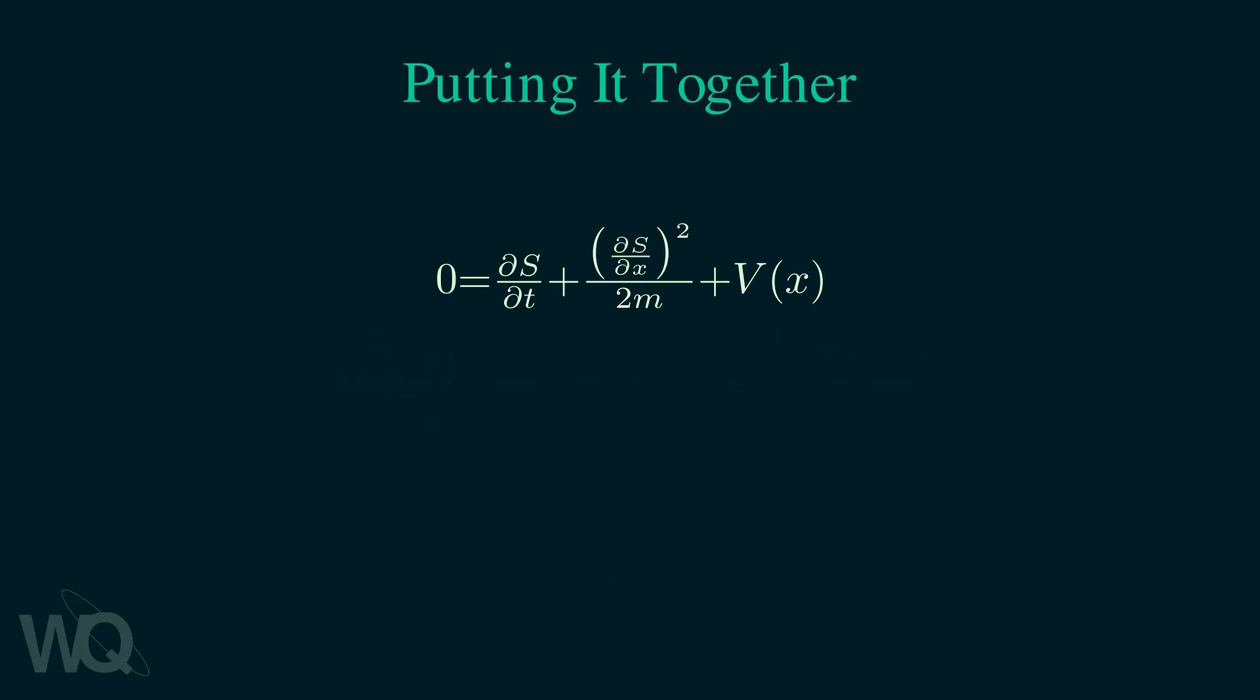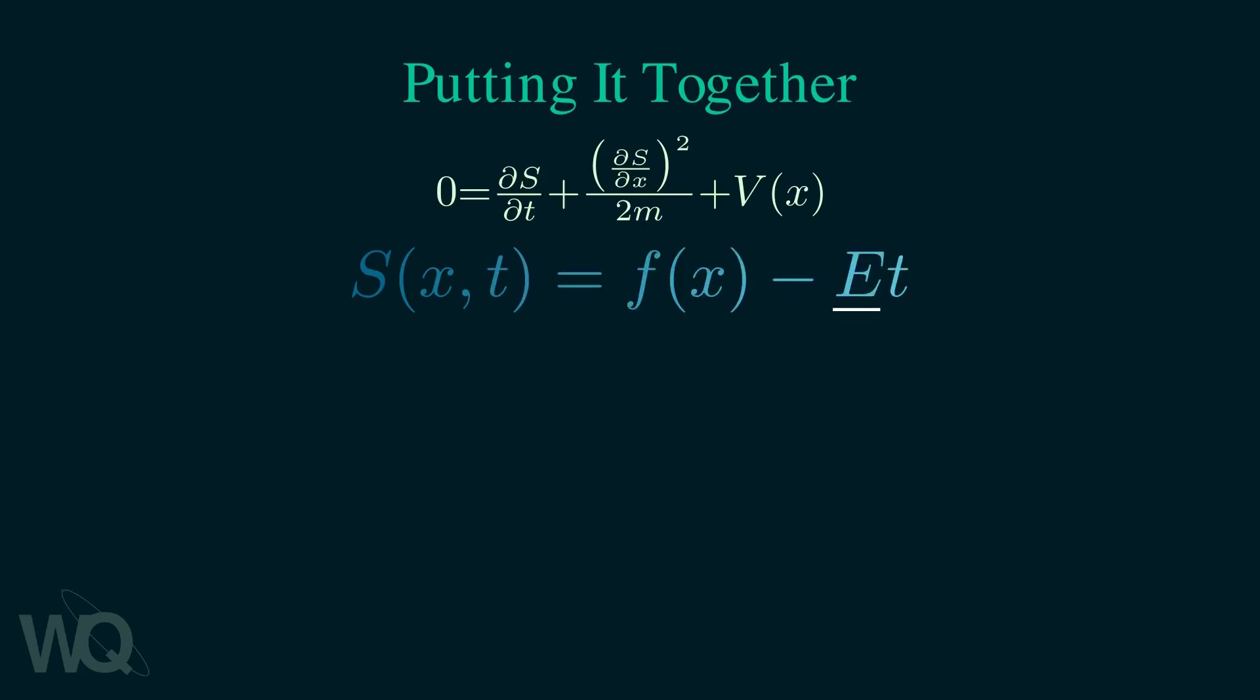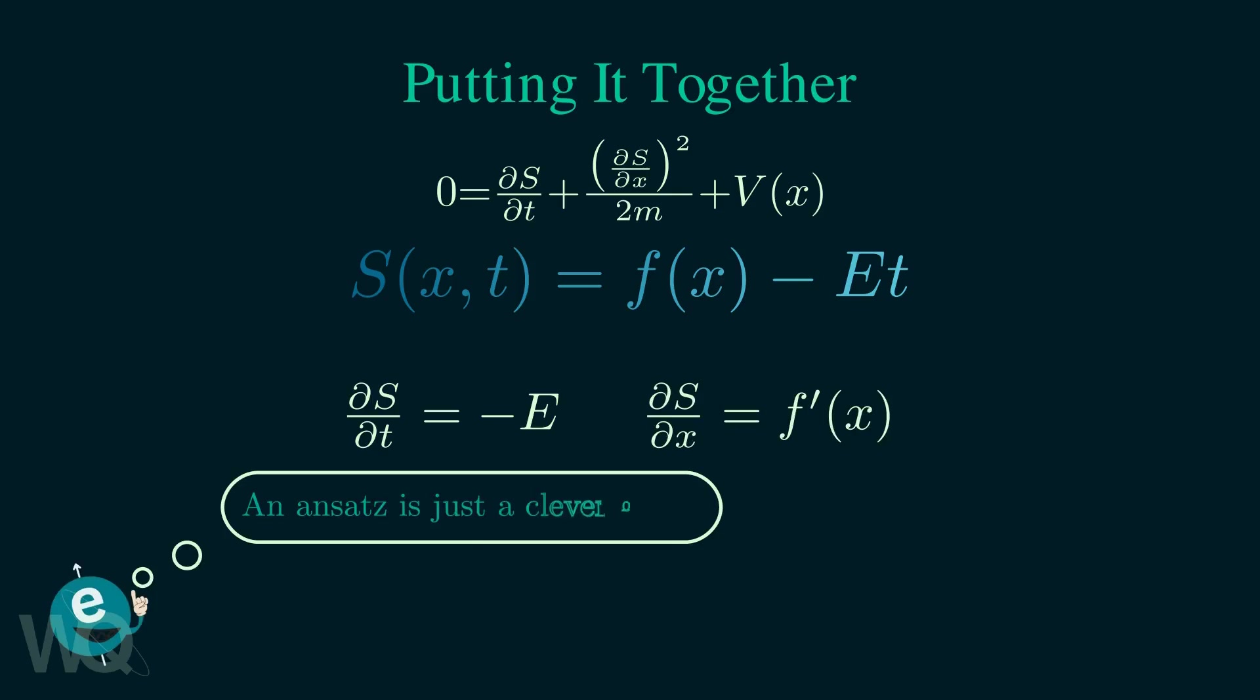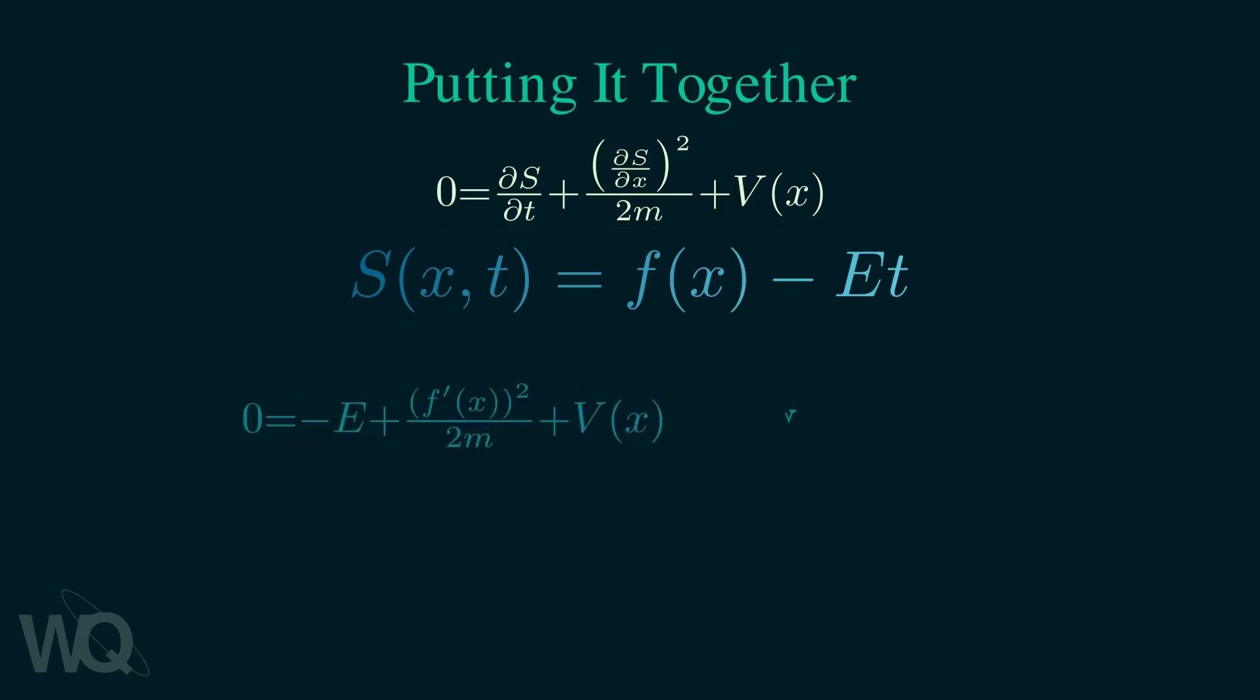So the goal is to simplify these derivatives. To proceed Schrödinger restricts his view to the solutions of this form, where E is the total energy. And this is apparently the usual trick according to Schrödinger. If we insert this for S, you will see why this ansatz is so nice. It reduces the problem to an ordinary differential equation. And this was the whole point.